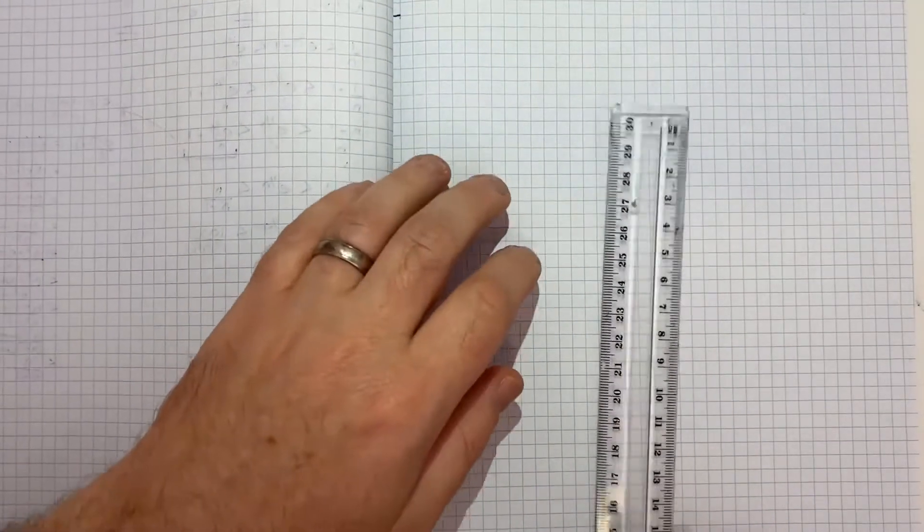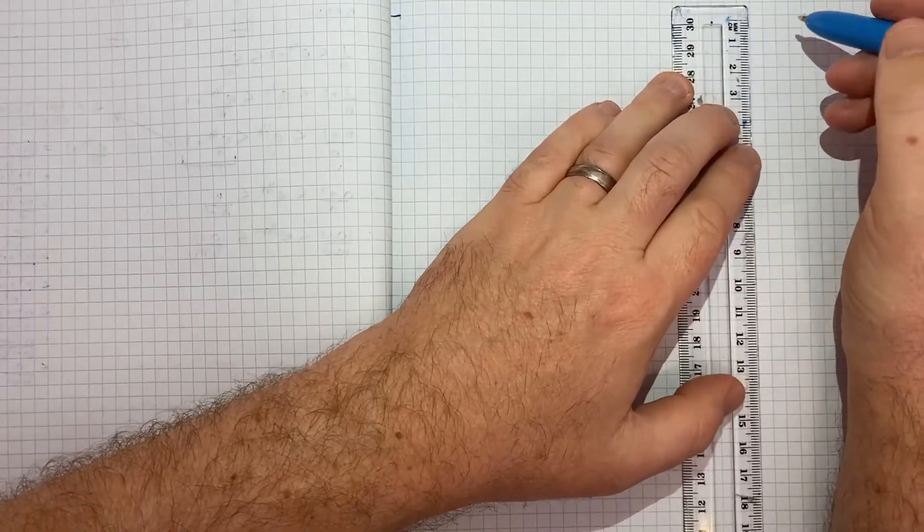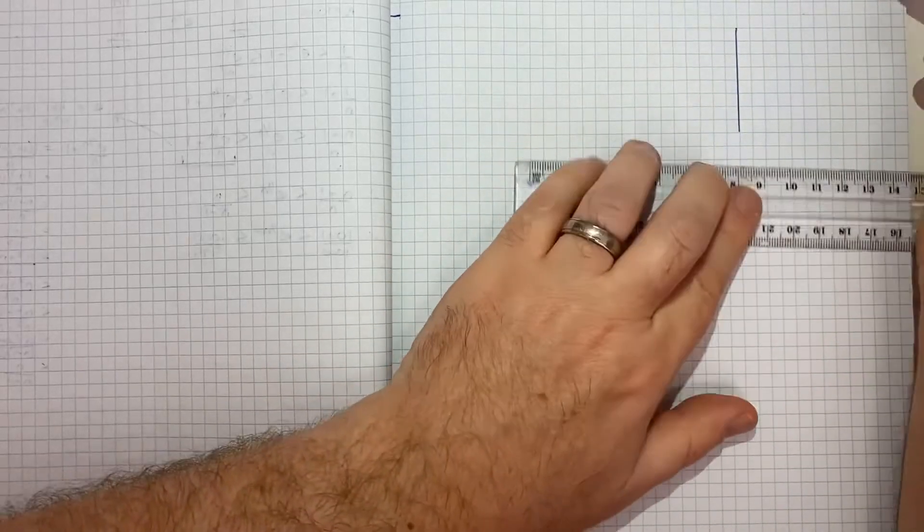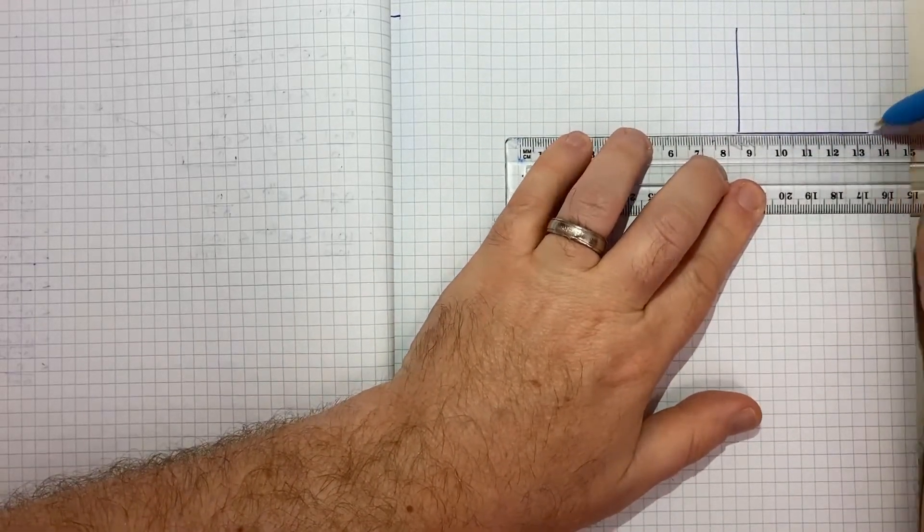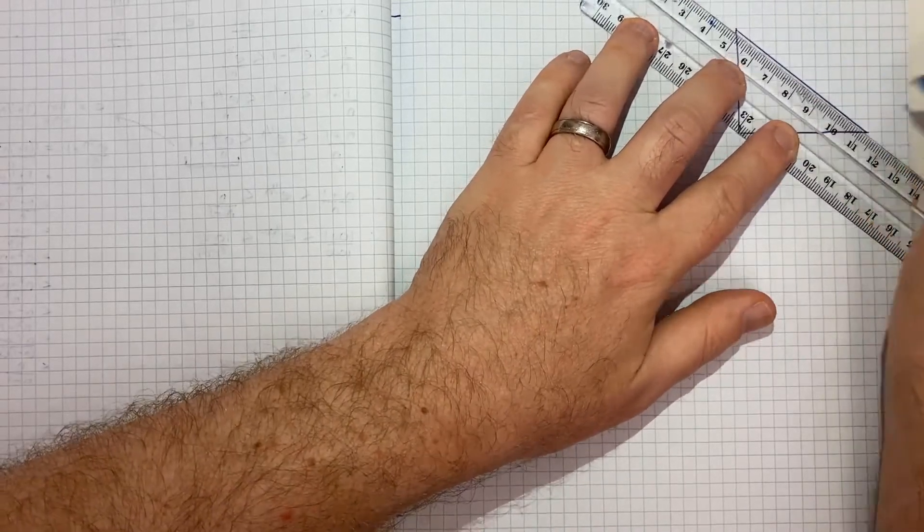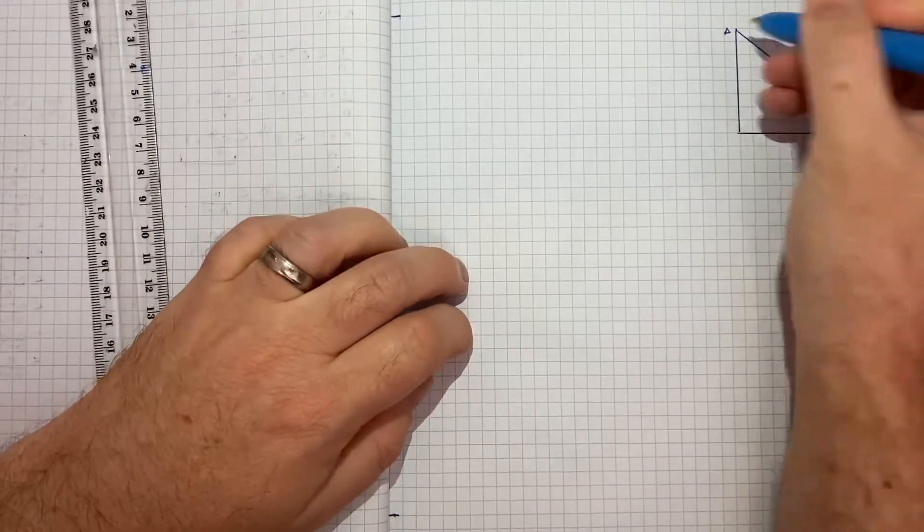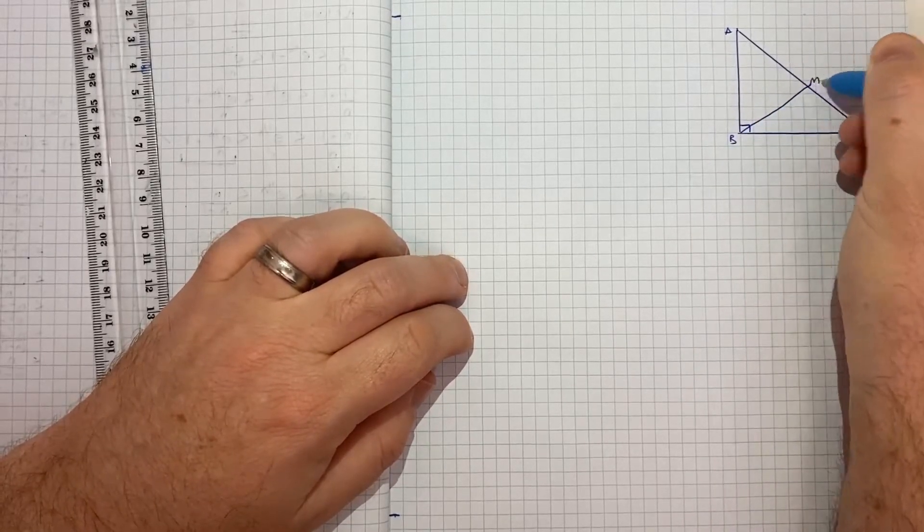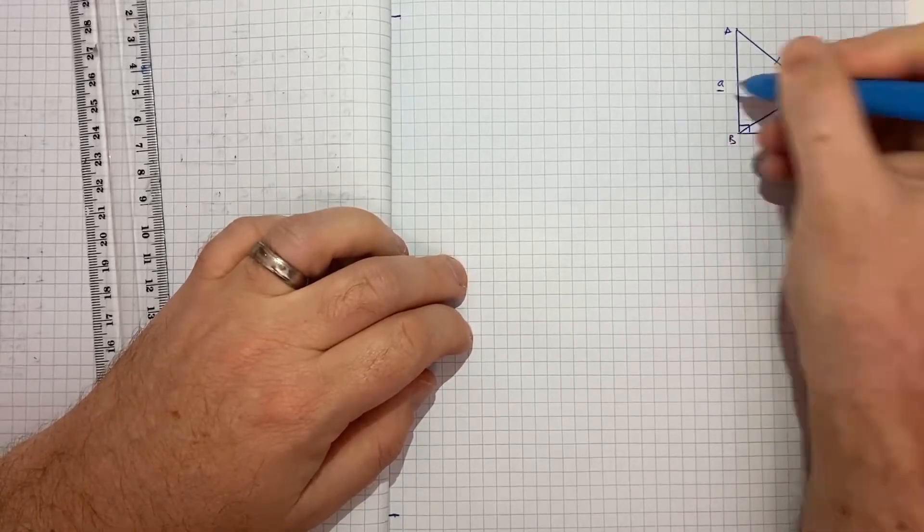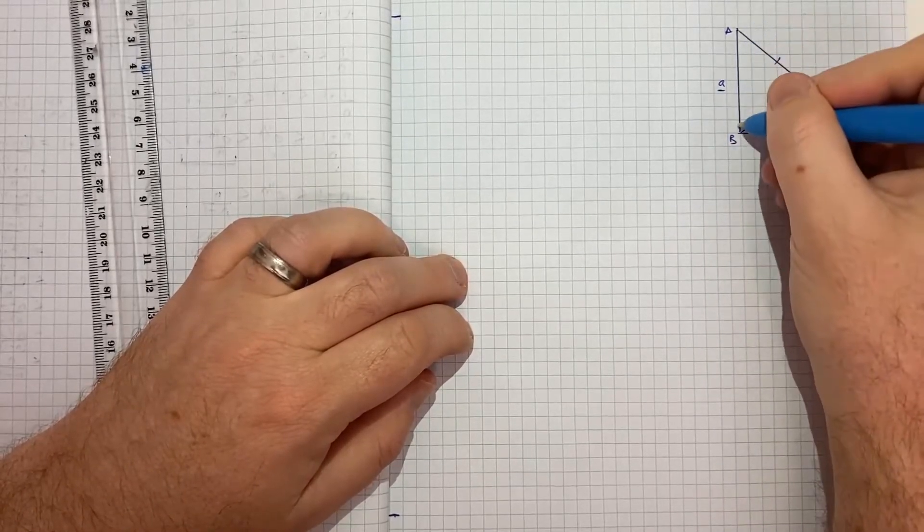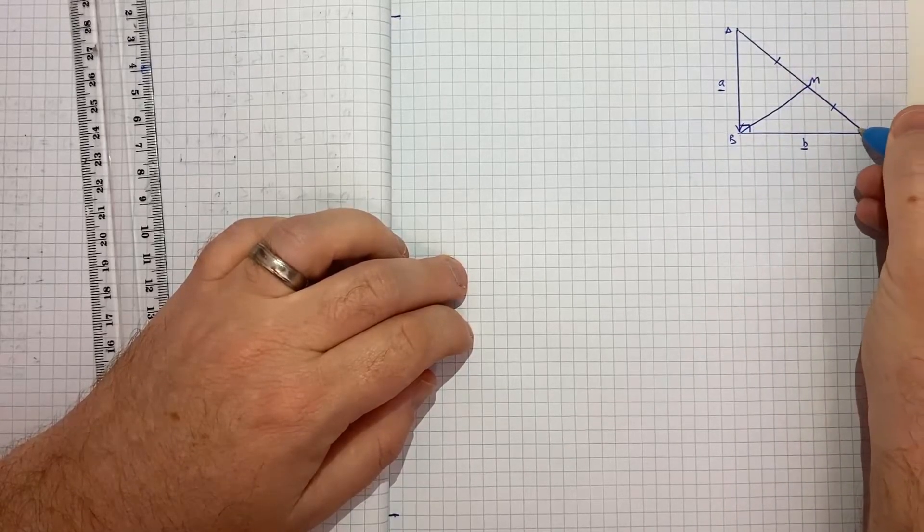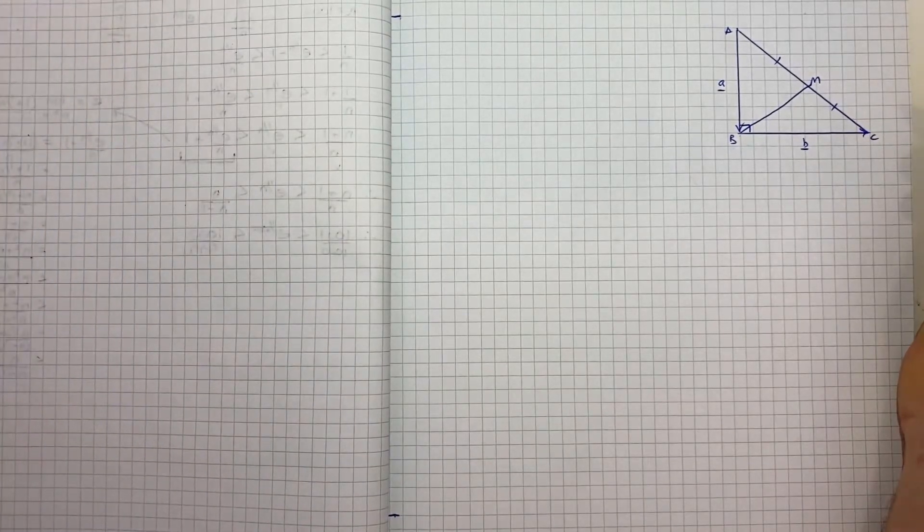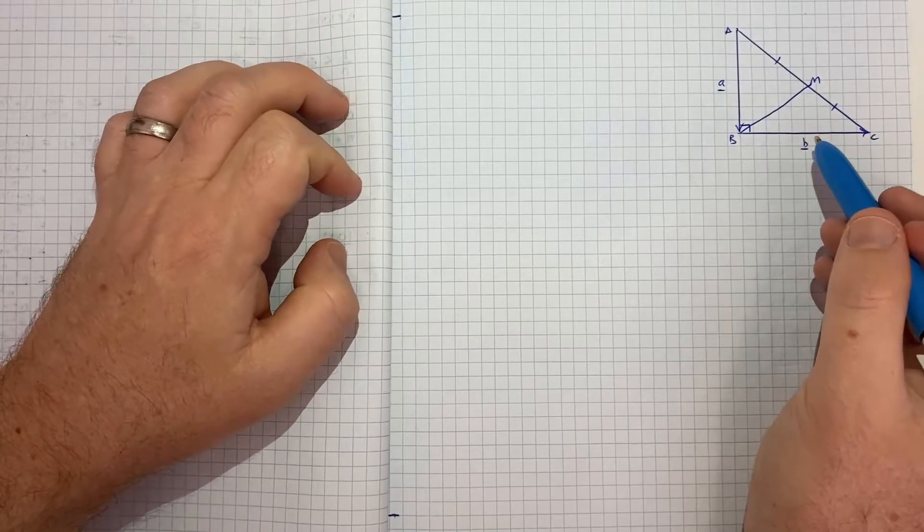So to start I'll just recreate this triangle off to the side just so we can refer to it. So we've got a, b, c. It's right angled. m is the midpoint. We've got this as vector a and vector b, where vector a is a to b, and vector b is b to c.